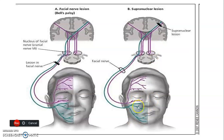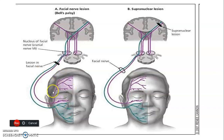A lower motor neuron lesion affects the whole ipsilateral half of the face because the lower motor nerves go directly to the muscles. This results in no wrinkles, disappearance of nasolabial folds, food accumulating in the vestibule, drooling of saliva, and inability to blink, causing the cornea to dry out.